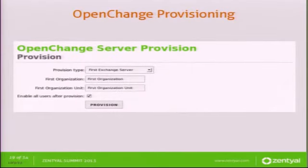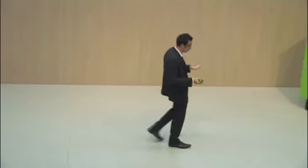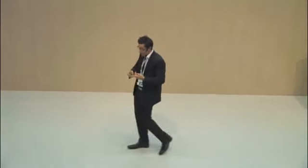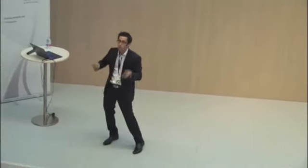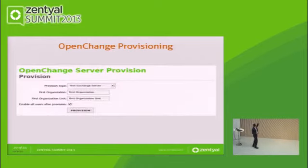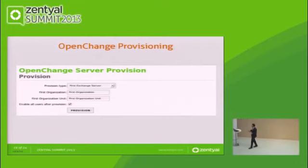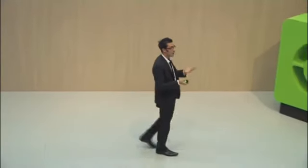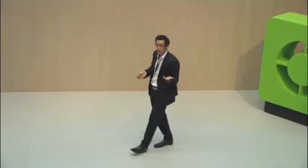Let's have a look at the OpenChange provisioning. We have two different ways of provisioning OpenChange. The first one is: this is the first Exchange server in the organization — a so-called standalone installation. In this case, the OpenChange server is linked to Samba 4 deployed as a primary domain controller, with no Exchange server in the domain. We configure the first organization and the first organizational unit, decide which users to enable as OpenChange users, click provision, and it does all the magic — updating the Samba schema with all the OpenChange requirements and creating the required databases.